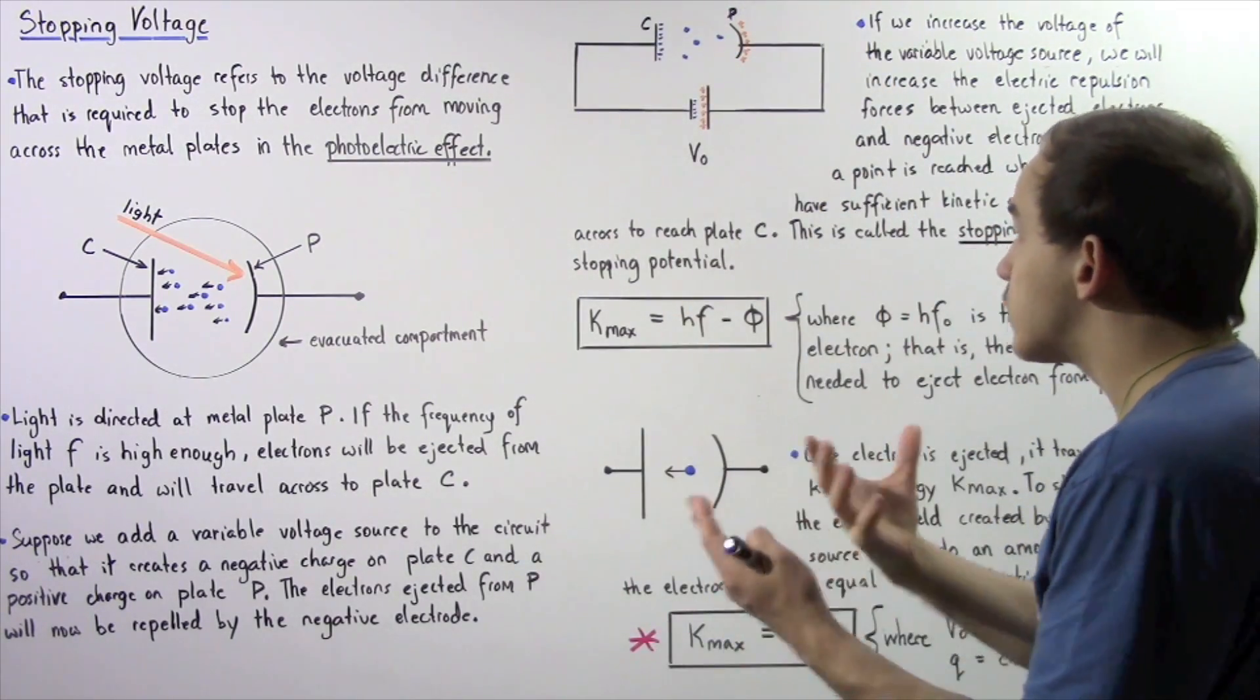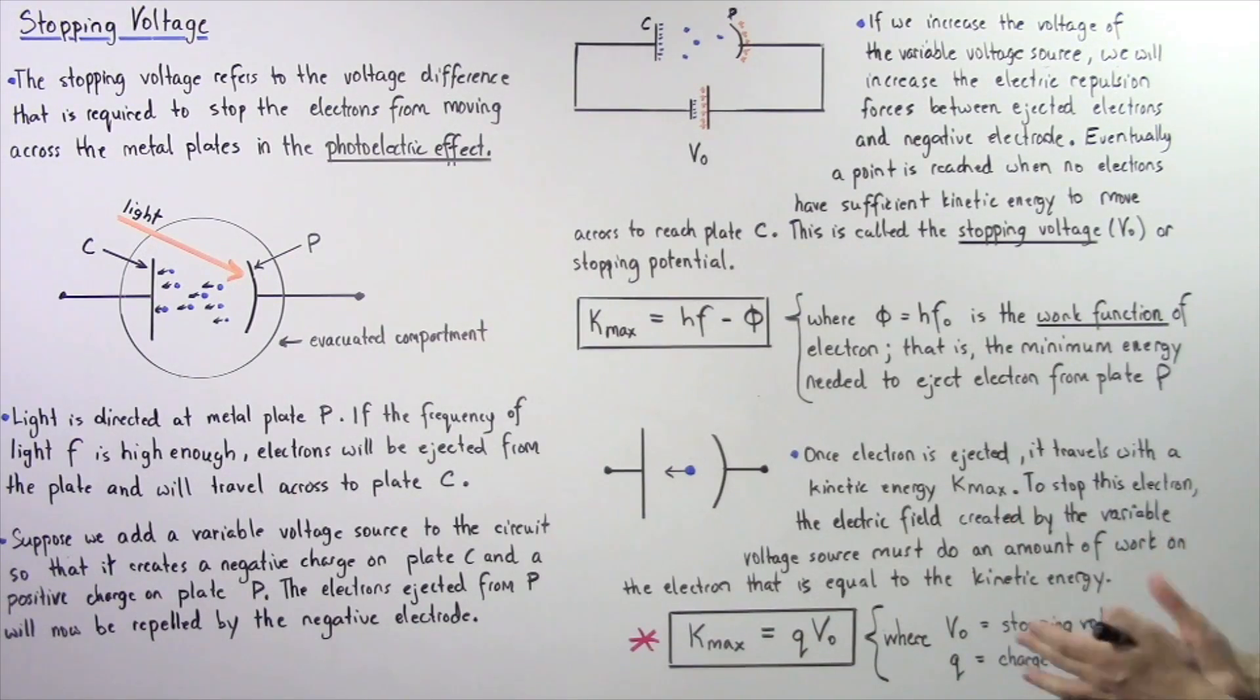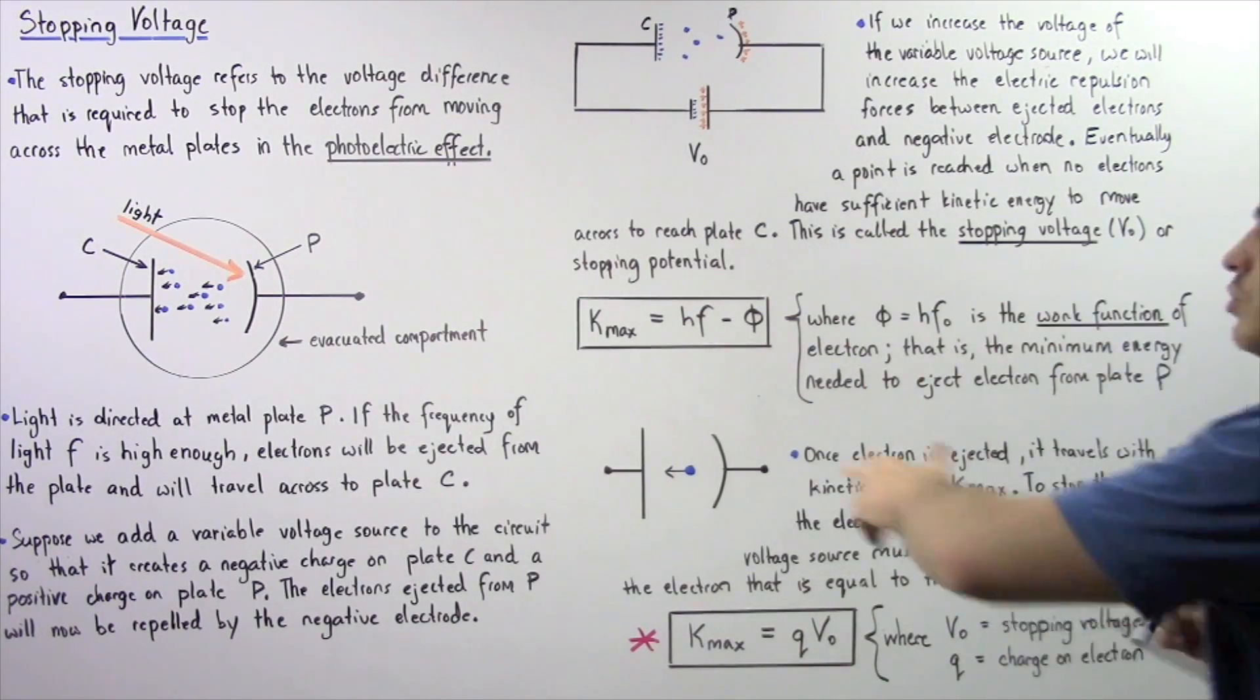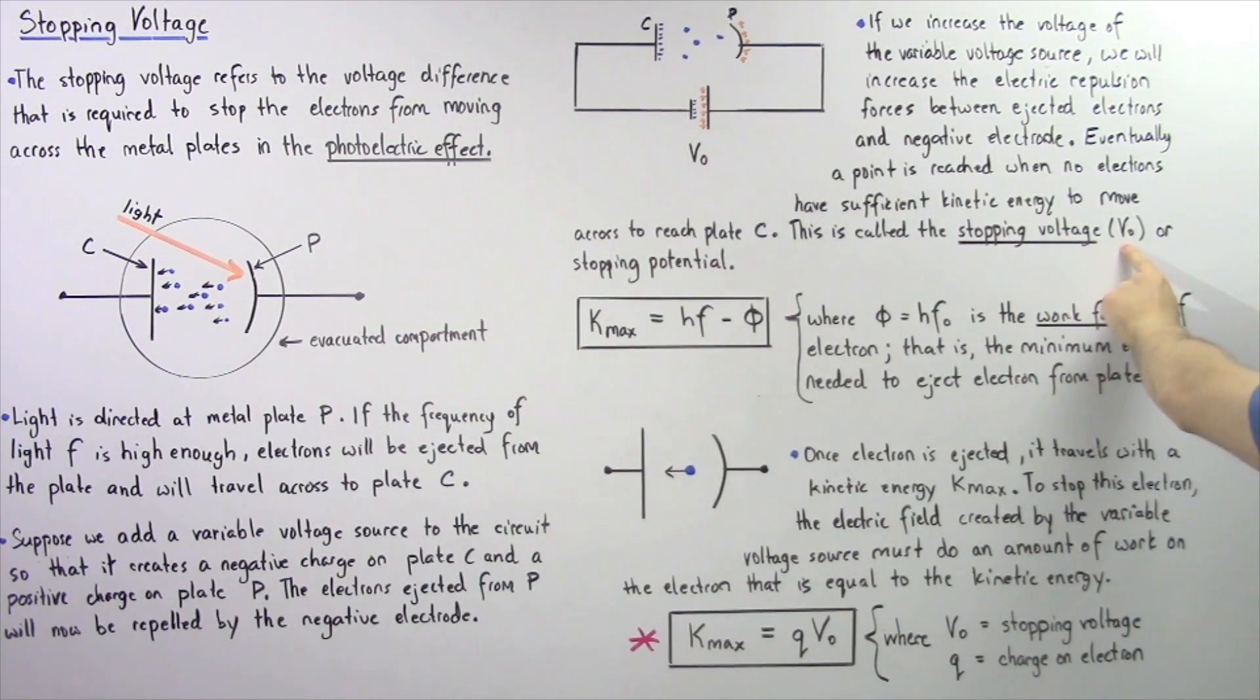So basically, the electric forces are simply too high. And this is known as the stopping voltage or the stopping potential given by V0.